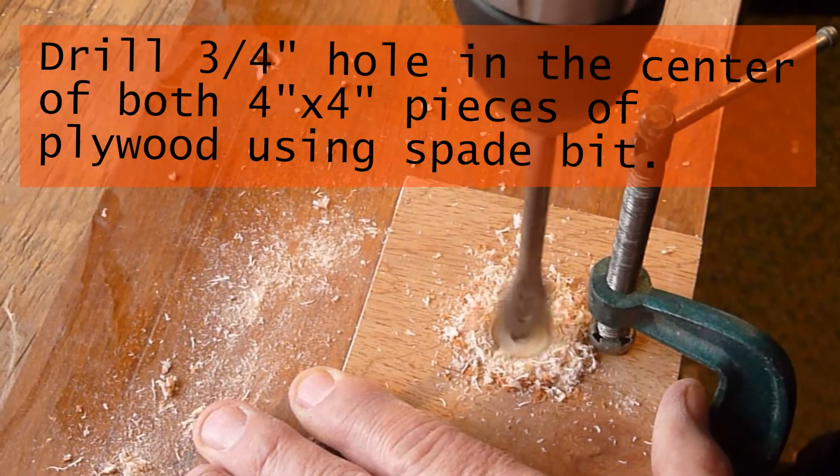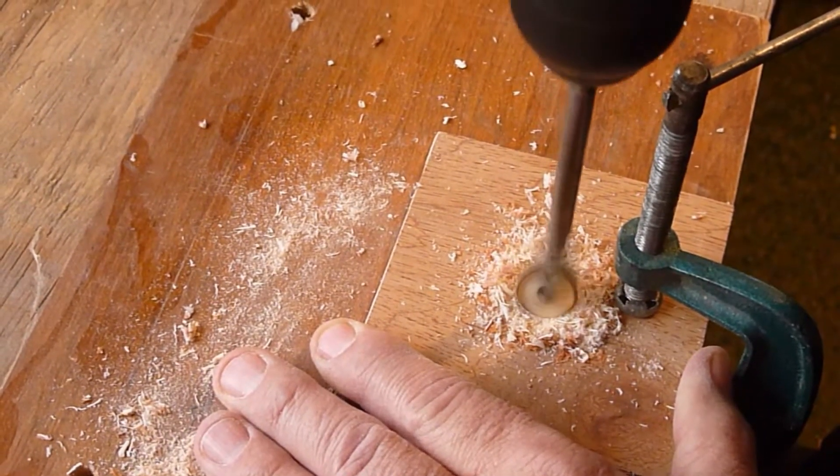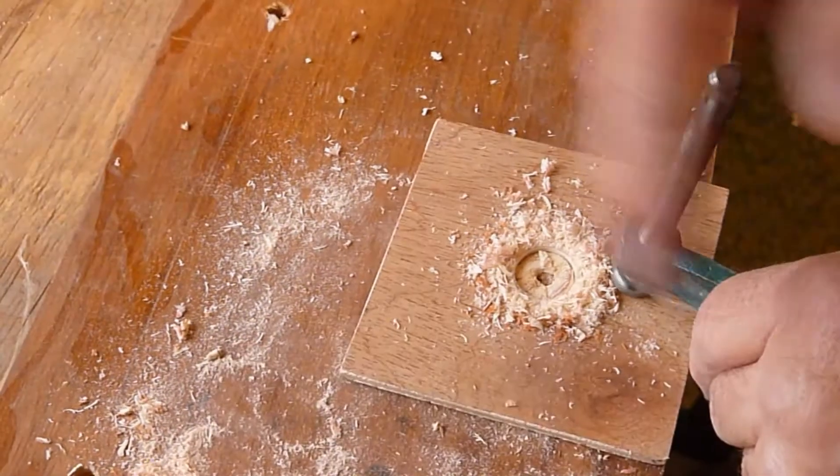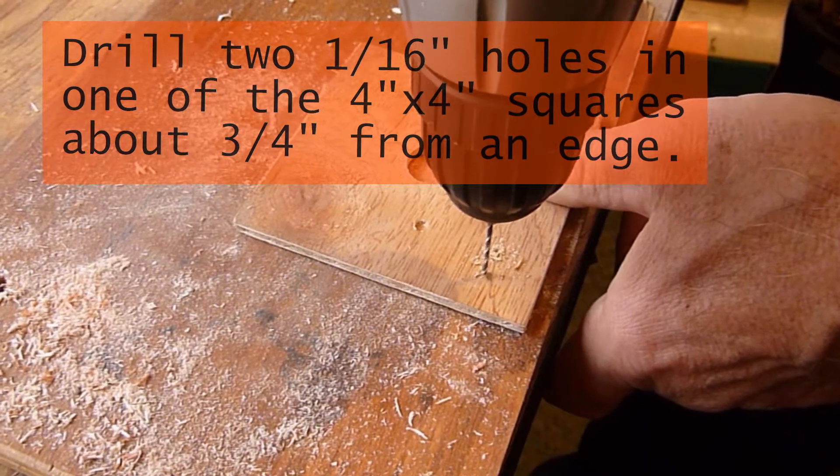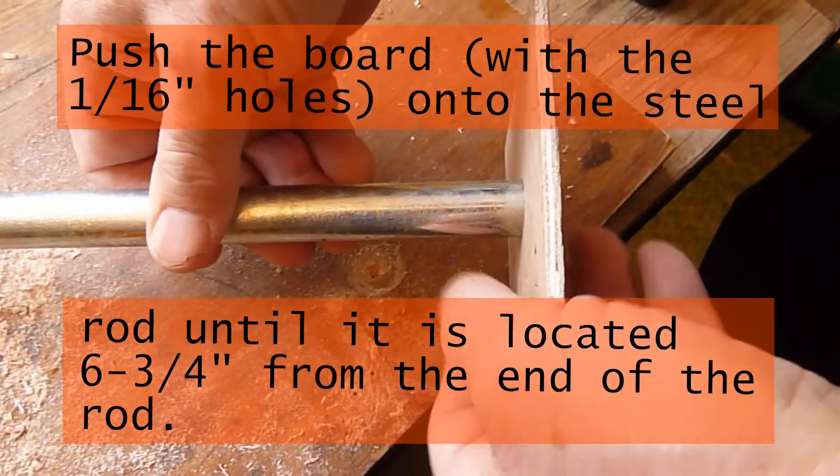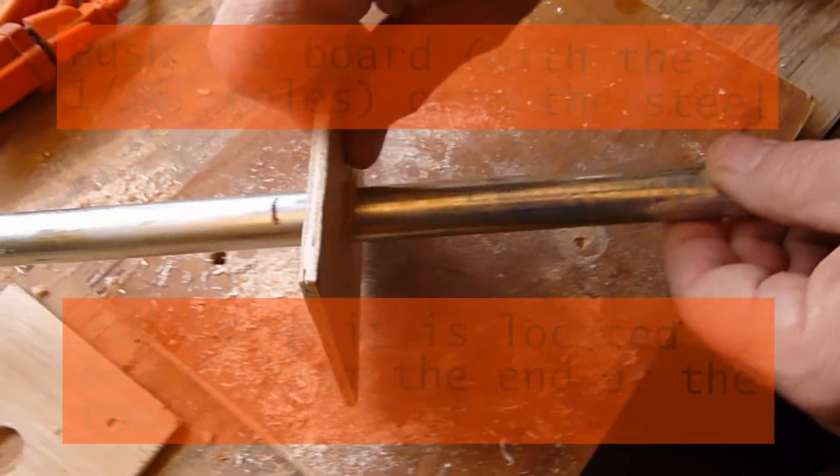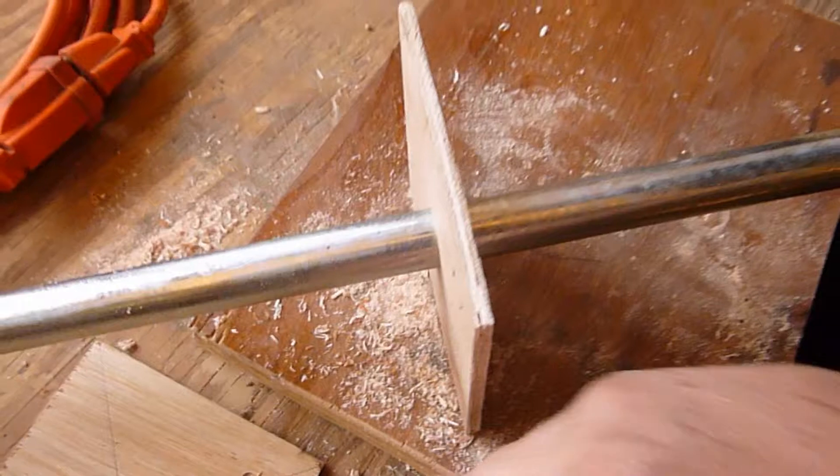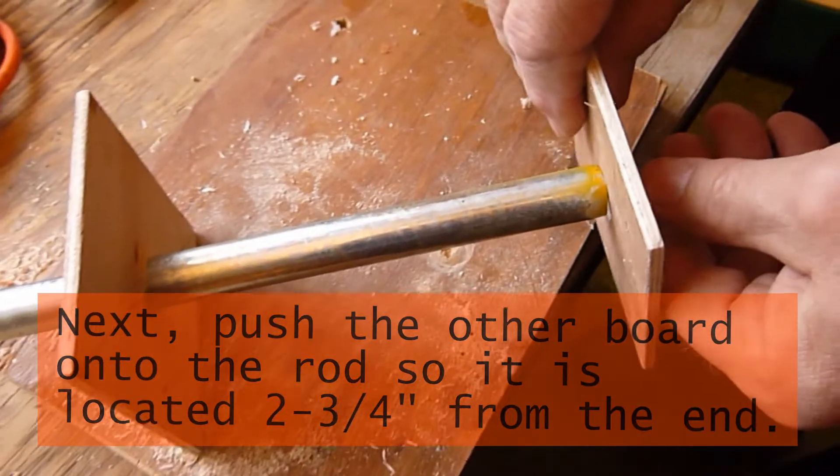Using the spade bit, drill a 3 1/4 inch hole in the center of both 4x4 pieces of plywood. Next drill two 1/4 inch holes in one of the 4x4 squares of plywood about 3 1/4 inch from an edge. Push the board with the 1/4 inch holes onto the steel rod until it is located about 6 and 3/4 inches from the end of the rod. Push the other board onto the rod so it is located about 2 and 3/4 inches from the end.